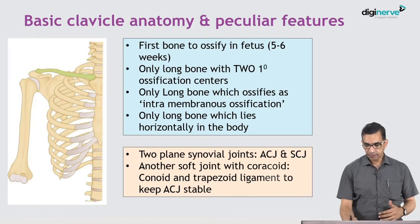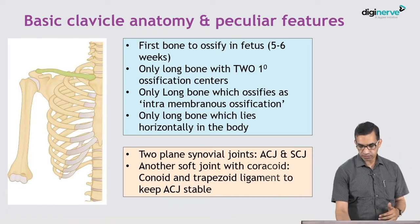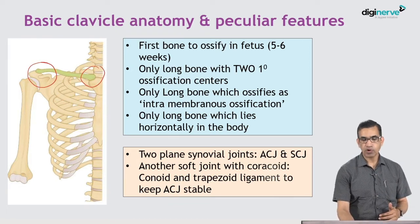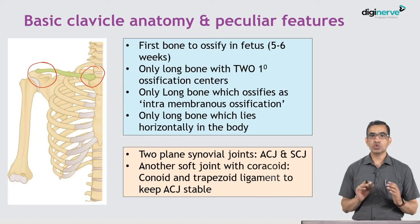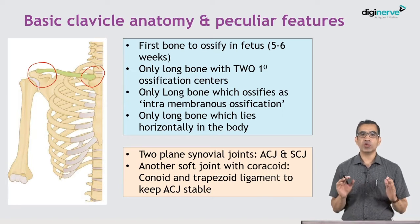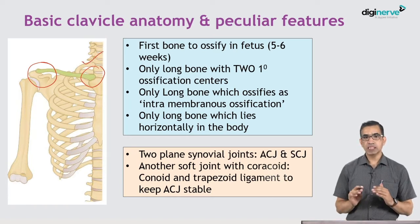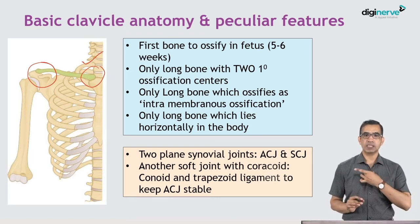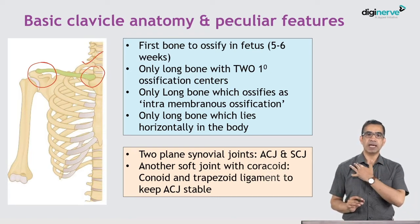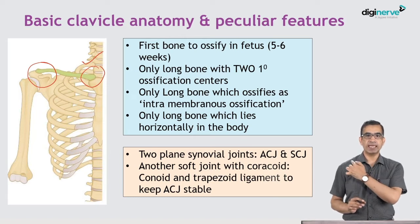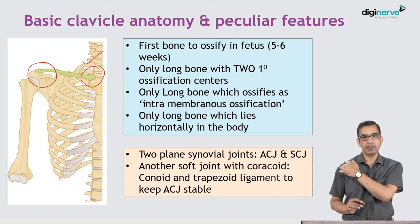Lastly, it is one of the only long bones which lies horizontally. If you look at the clavicle, towards the midline and towards the lateral side, it forms two joints — two synovial joints. On the medial end it forms the sternoclavicular joint, along with the sternum in the midline, and at the lateral end it forms the acromioclavicular joint.